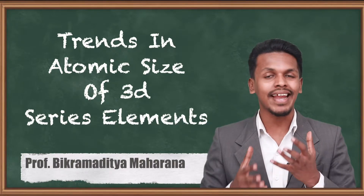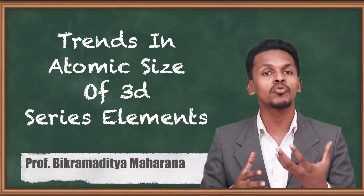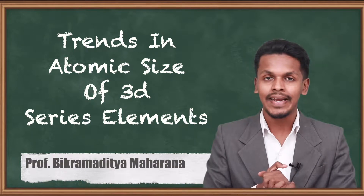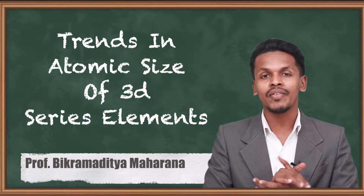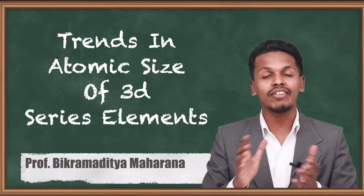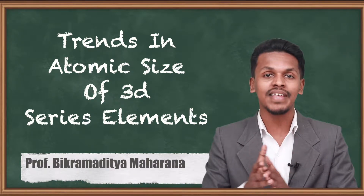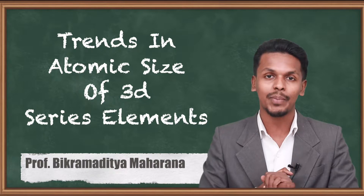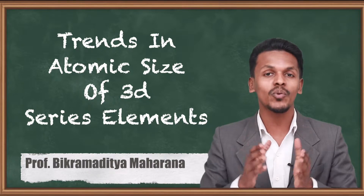In the previous topic we discussed why Fe, cobalt and nickel don't show the expected highest oxidation state. Now in this topic we are going to talk about the trends in the atomic size of the 3d series elements.